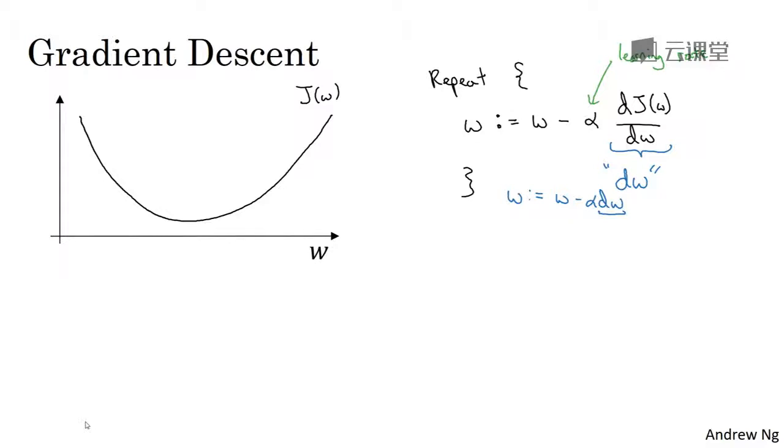let's just make sure that this gradient descent update makes sense. Let's say that w was over here. So you're at this point on the cost function j of w. Remember that the definition of a derivative is the slope of a function at the point. So the slope of a function is really, the height divided by the width, of a little triangle here at this tangent to j of w at that point. And so here, the derivative is positive.